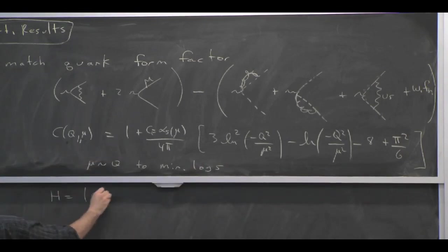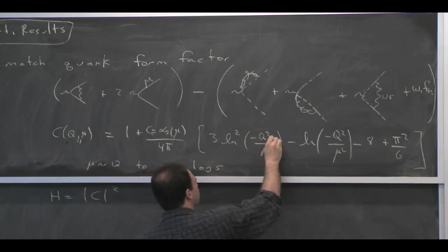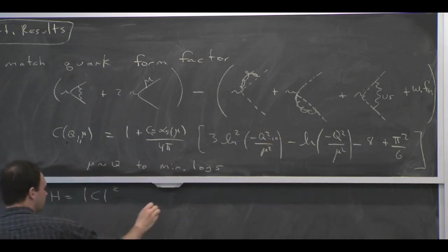And H is the square of this thing. So there's imaginary parts from these negative logarithms. These are minus Q squared minus I0. But when I take the mod square, this thing is real.